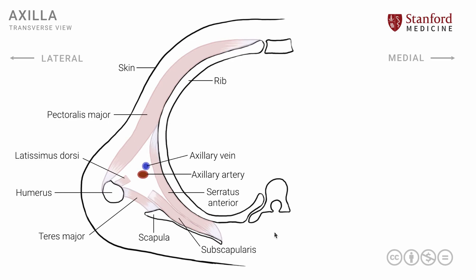There are a number of other structures in this area related to the axillary vessels in the form of nerves and lymph nodes. One nerve is very important and easily identified — it sits on the serratus anterior muscle and is known as the long thoracic nerve, seen here in its location on the serratus anterior muscle. There are several other nerves in relation to the axillary vessels that are parts of the brachial plexus collectively; we will look at those details in a future lesson. To complete the story, the remainder of this area is filled with lymph nodes and fat, represented here in yellow.